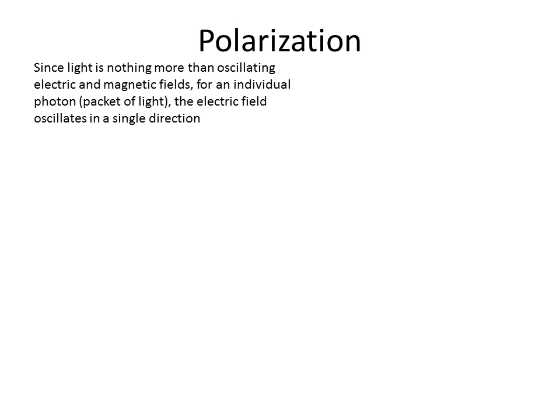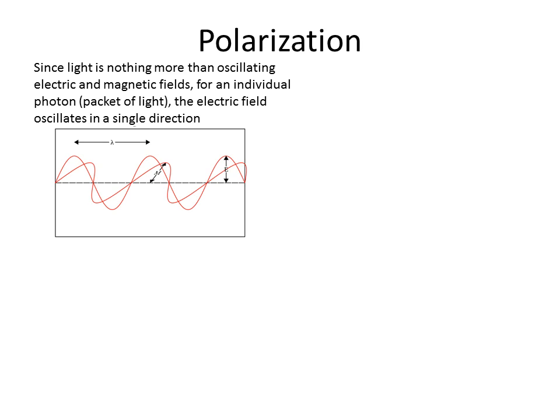In this video, we're going to talk about the concept of polarization. Polarization comes about because of the oscillating electric and magnetic fields for an individual photon, or a photon as a packet of light. It really just comes down to the fact that the electric field oscillates for a single photon in a single direction.